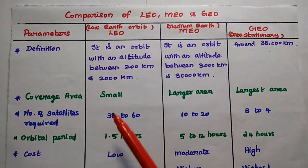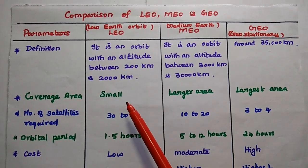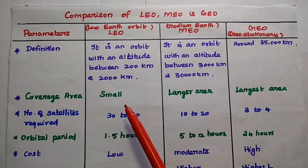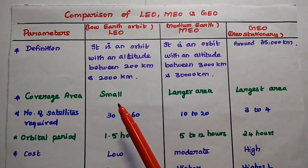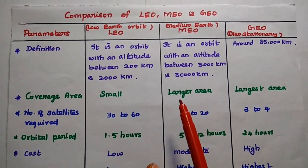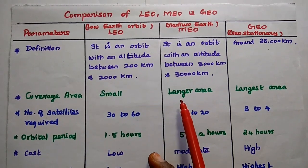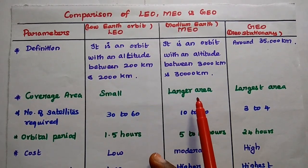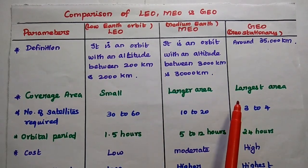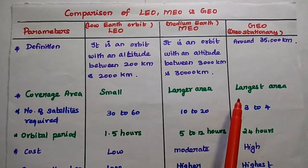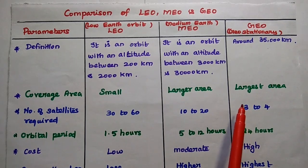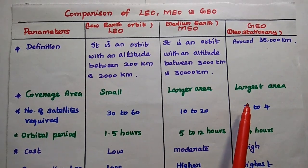Due to the close proximity to earth, LEO satellites can cover only a small area of the earth. MEO can cover a larger area when compared with LEO. Geostationary orbit satellites can cover the largest area of the earth.